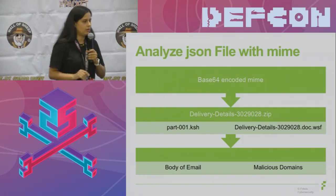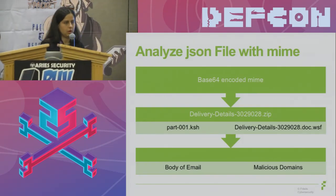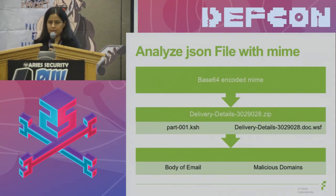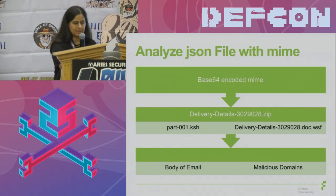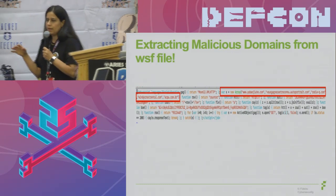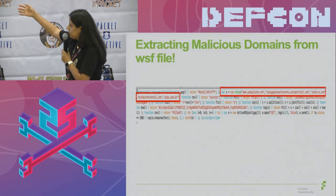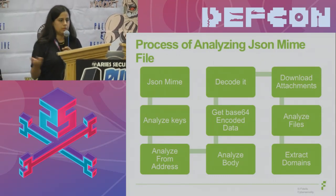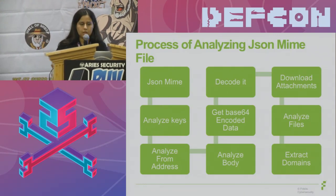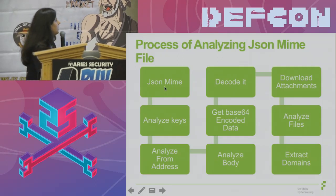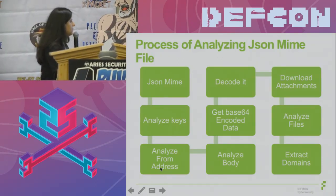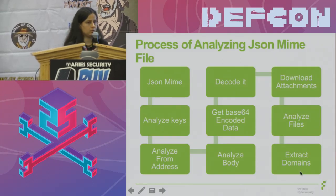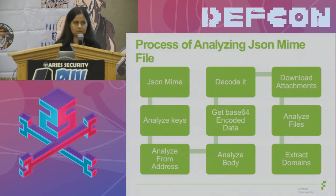The process of automation was: get the base64-encoded MIME key, decode the value, and get a couple of files. The most important one was the file that had the attachments. Looking at the attachments, for a particular campaign, the domains were different but the structure was the same. So I started writing an automated tool for extracting the information. The steps were pretty much like following whatever I'd done manually. The steps were: get the JSON MIME, analyze keys, analyze from-address, analyze the body, get base64-encoded data, decode it, download attachments, analyze files, and extract domains. That's how YALDA started working.